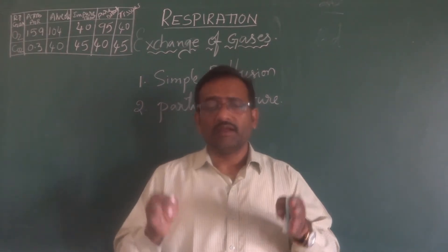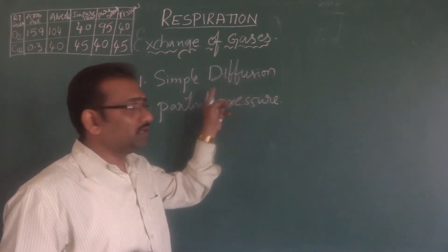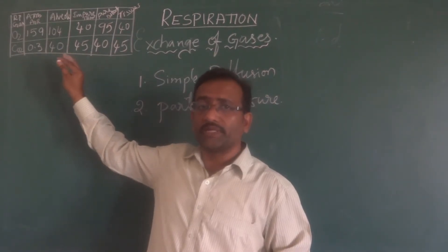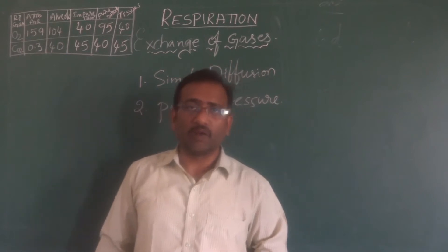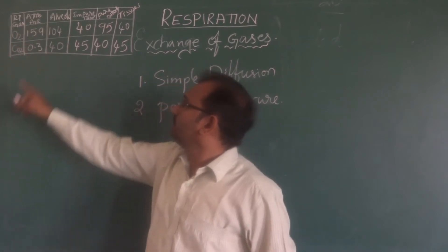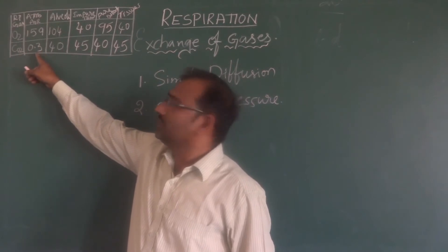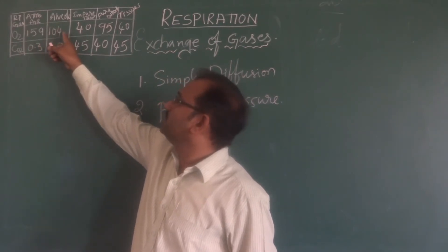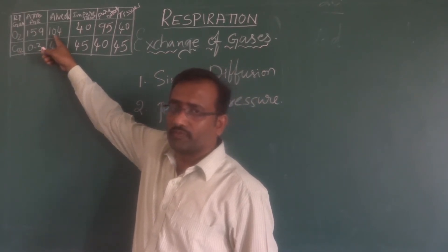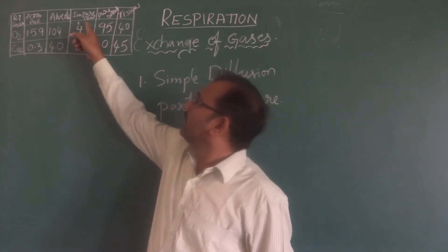Exchange of gases is completely dependent on simple diffusion, a physical phenomenon, and partial pressure. This table indicates the partial pressure of oxygen and carbon dioxide. In the atmosphere, oxygen is 159 units and CO2 is 0.3 units. In the alveoli, the partial pressure of oxygen is 104 and CO2 is 40.